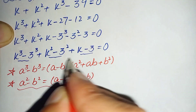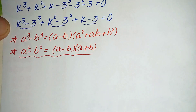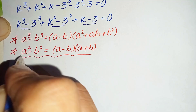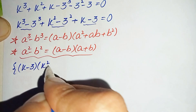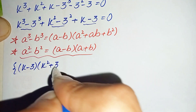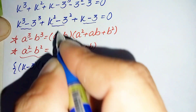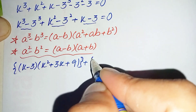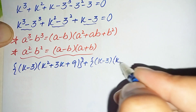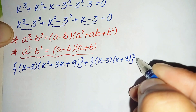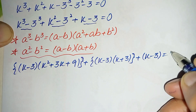Now using these two identities, where A is k and B is 3, this will become: (k minus 3)(k squared plus 3k plus 9), plus (k minus 3)(k plus 3), plus (k minus 3), is equal to 0.